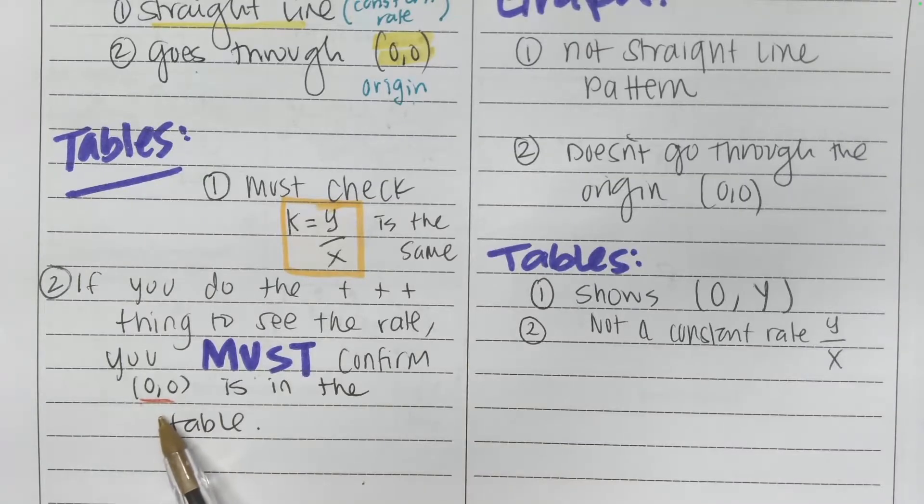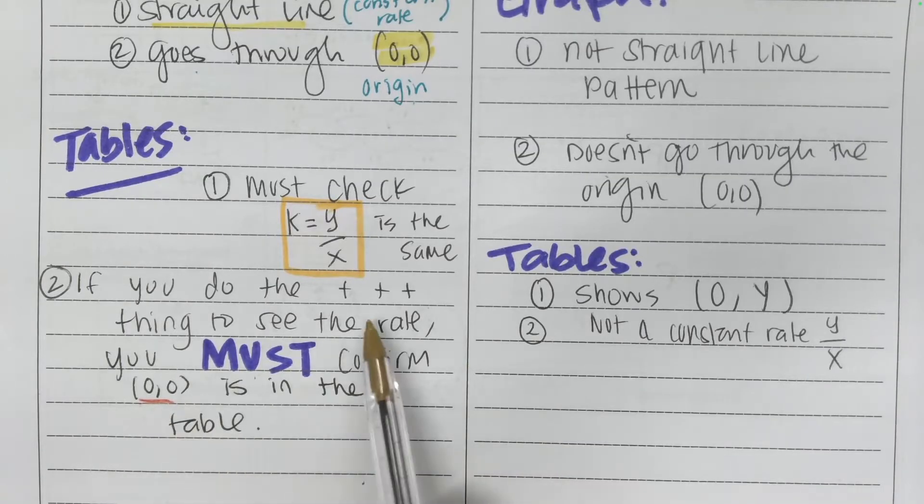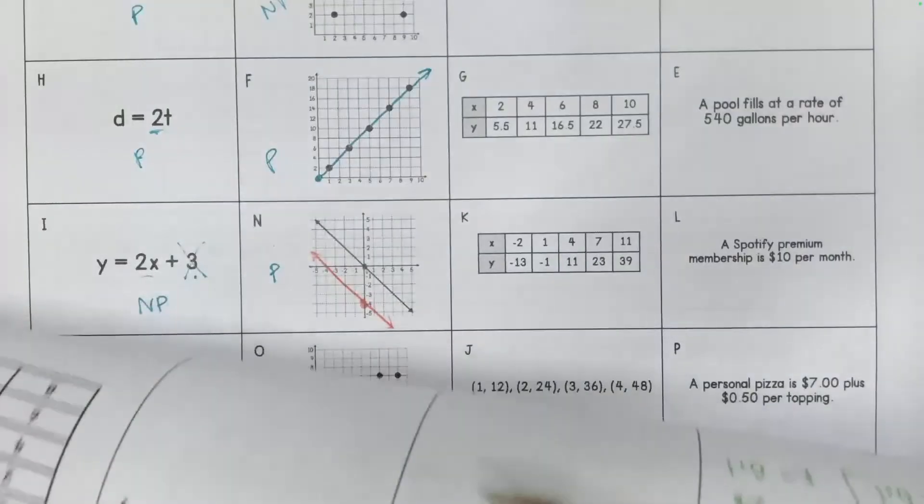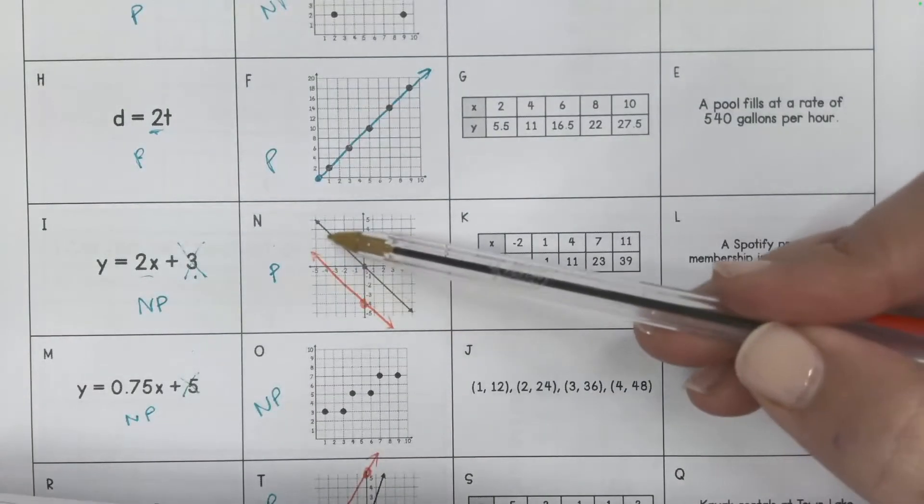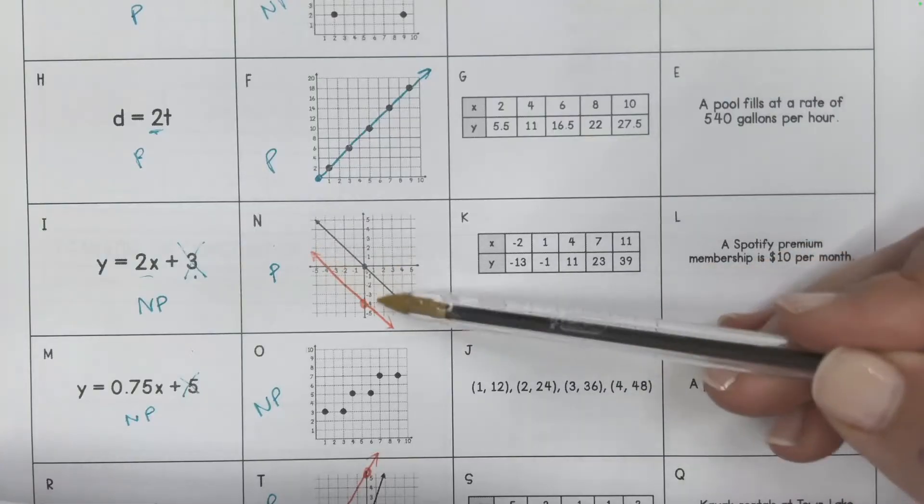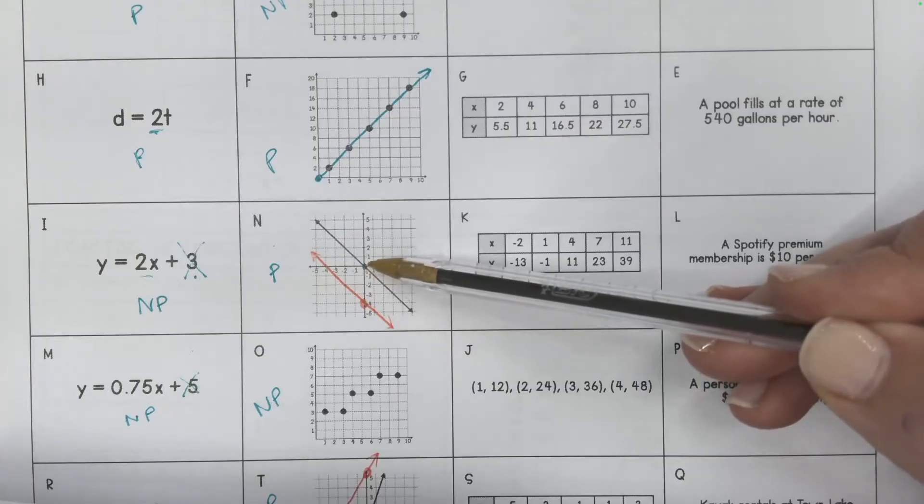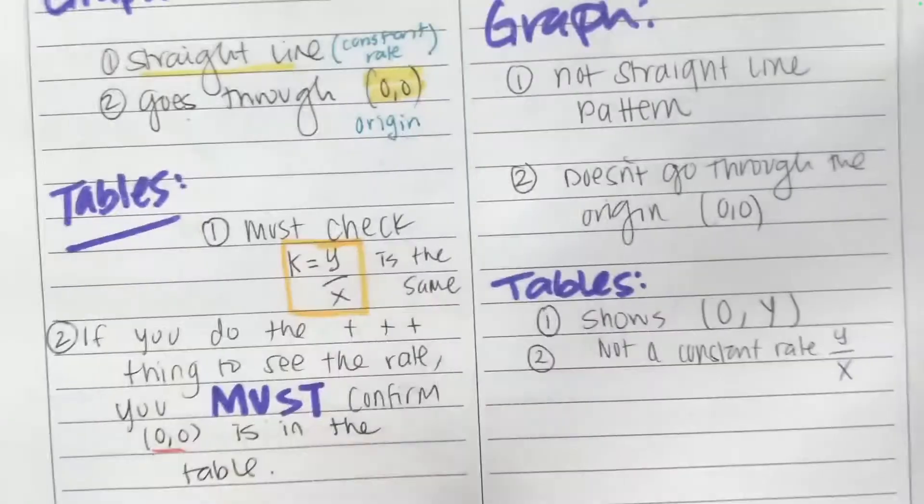That's very important that you must confirm that because, again, if it's going plus, plus, plus a number, it just means that it's a straight line. That's what it means to be constant is that I'm increasing by or decreasing by a certain value. So that's why you have to confirm that it goes through the origin to make it proportional.